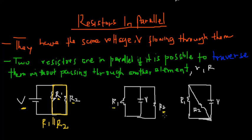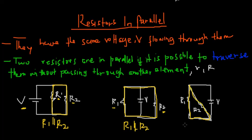In the second example, we want to identify whether R1 and R2 are in parallel. Traversing through them, we don't come across any other element like a voltage source or another resistor, so R1 and R2 are in parallel. In the third example, traversing through R1 and R2 again reveals no other element, so R1 and R2 are also in parallel.